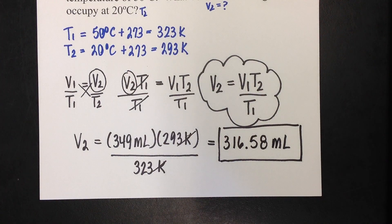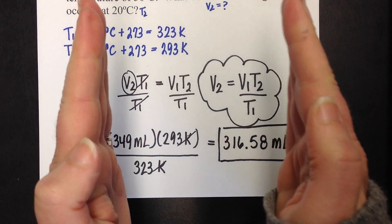So, I started off with 349 milliliters at 50 degrees. So, 349 milliliters at 50.